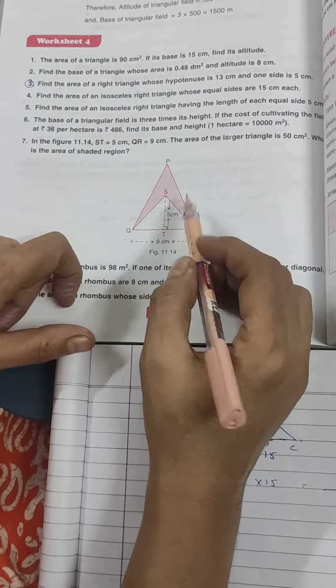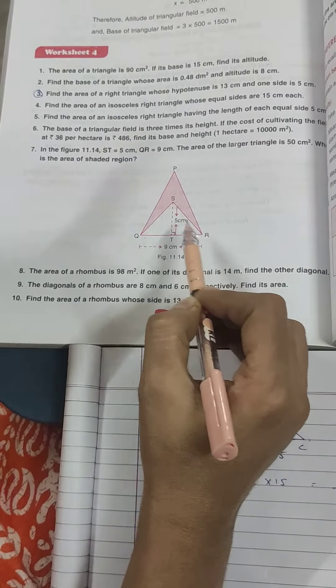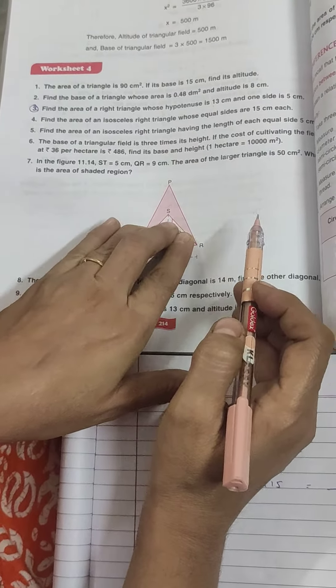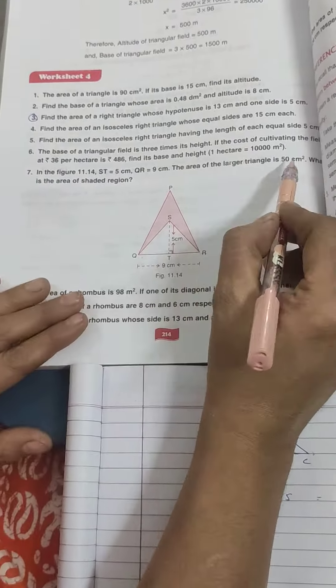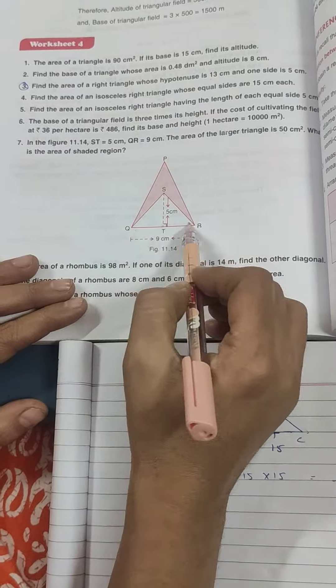Shaded region is area of triangle PQR minus area of triangle SQR. I will remove this, so here it will save. Now PQR is 50. What do I have to minus 50? This triangle area.